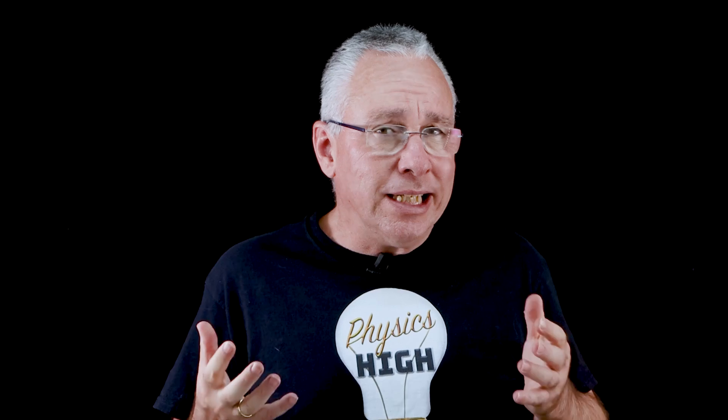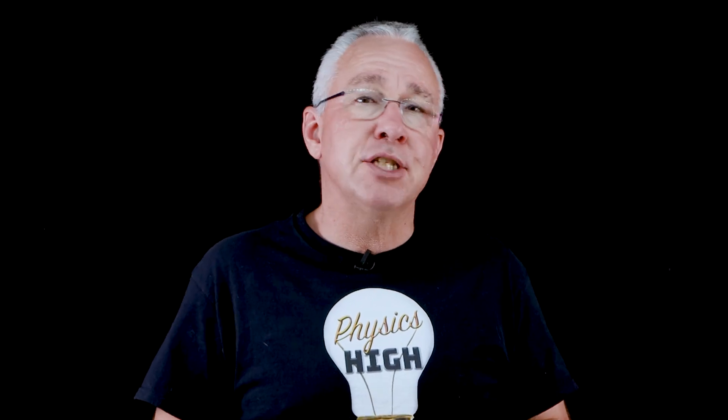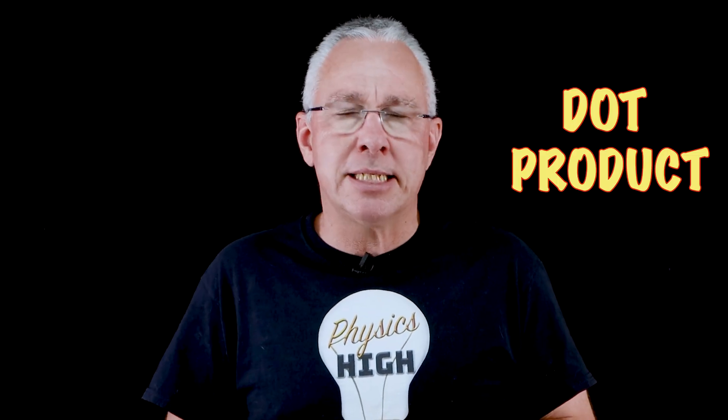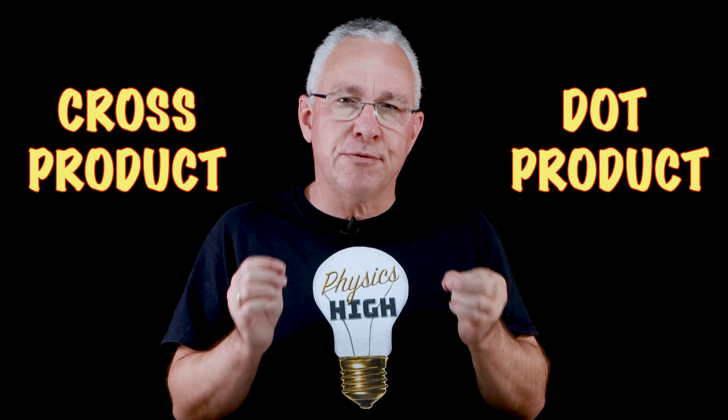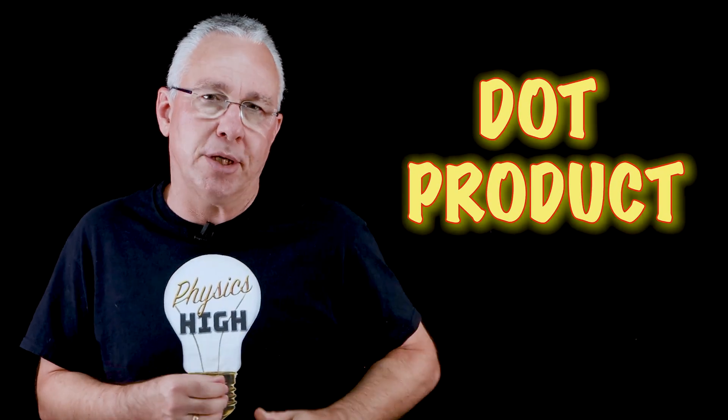When adding vectors, it's simply adding the components together to work out the final result. But what if we need to multiply vectors together? There are two ways to multiply vectors. The first is referred to as the dot product, and the second is the cross product. In this video, we're going to focus our attention to the dot product.